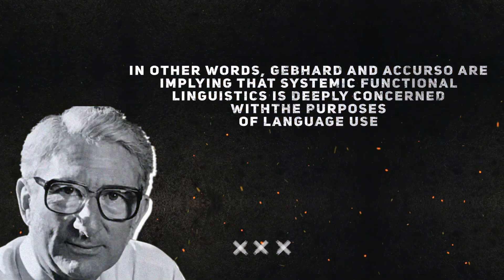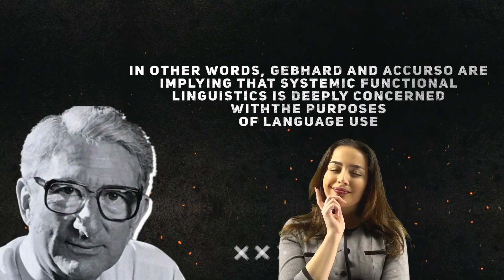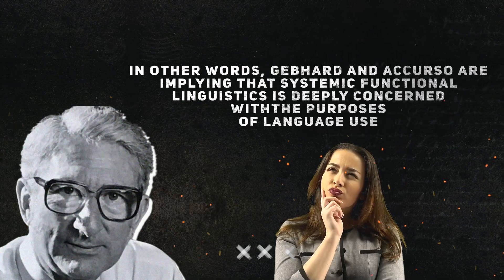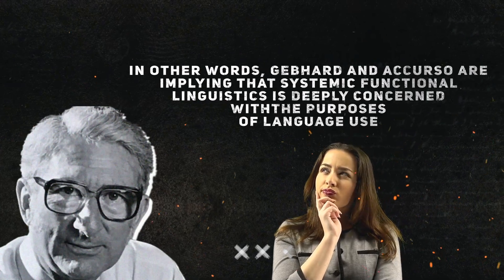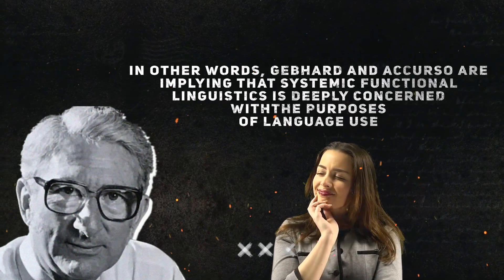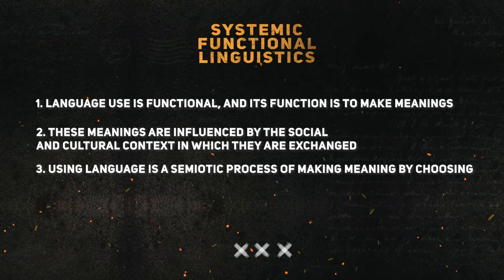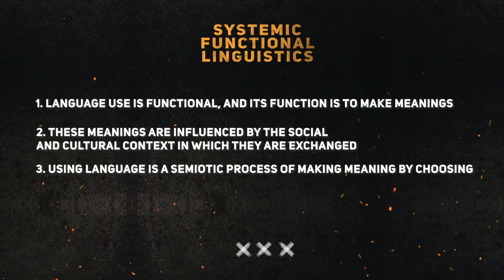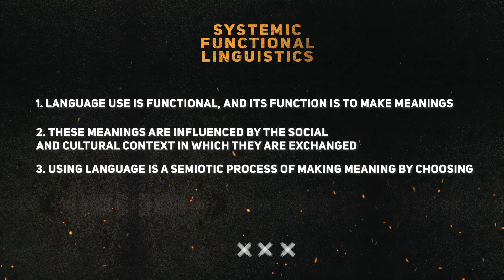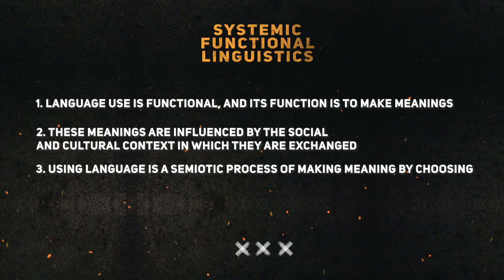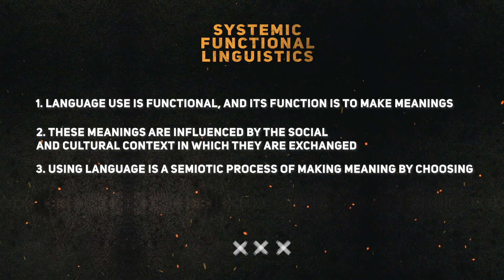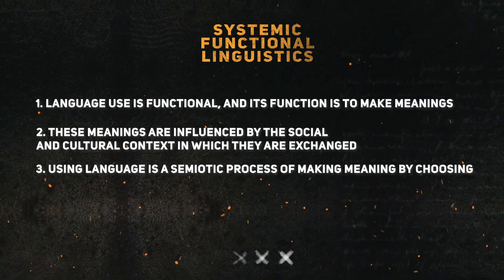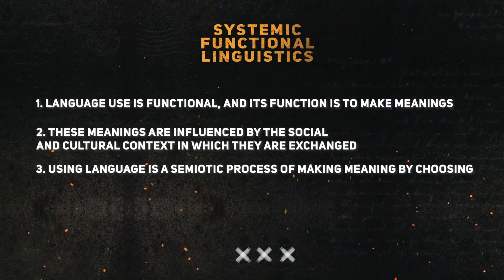Gebhard and Accurso are implying that Systemic Functional Linguistics is deeply concerned with the purpose of language use. Let us now look at their principles of SFL. They hold that language use is functional, and its function is to make meaning. These meanings are influenced by the social and cultural context in which they are exchanged. Using language is a semiotic process of making meaning by choosing.